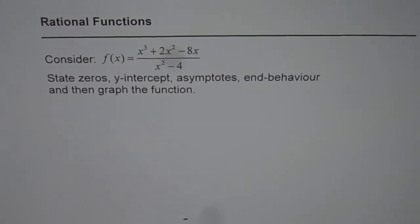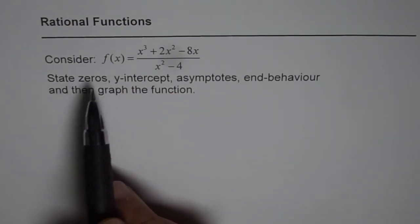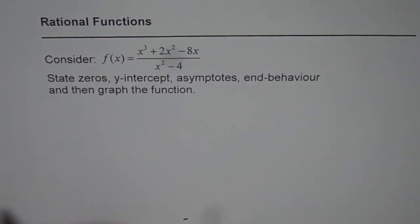I'm Anil Kumar, and let me first thank my subscriber Ellen for asking me to solve such a beautiful question on rational functions. While this question is complete in itself, it has all the components of rational functions which you should understand. The question is: consider f(x) = (2x³ + 2x² − 8x) / (x² − 4). State zeros, y-intercepts, asymptotes, end behavior, and then graph the function. So let's go through them one by one.